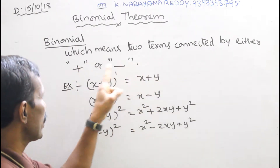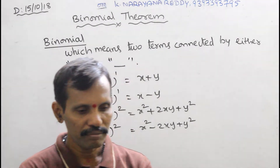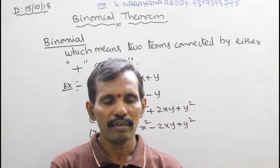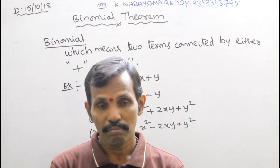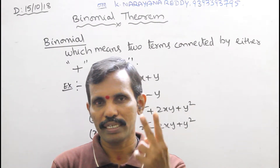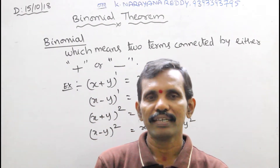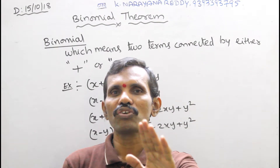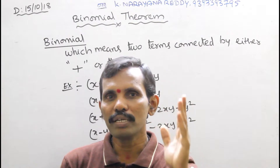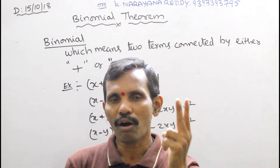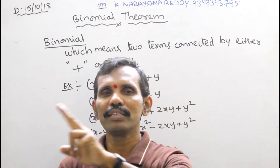Binomial means two terms connected by either plus or minus. Listen carefully — there are four operators in mathematics: addition, subtraction, multiplication, division. But in binomial, we can use only two operations, that is addition and subtraction, that is plus and minus. That is why this is called Binomial theorem.